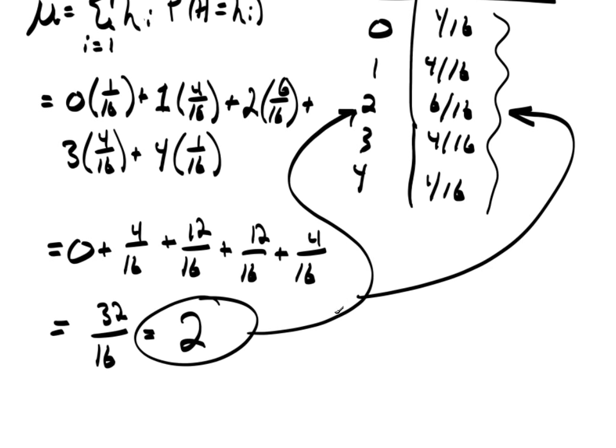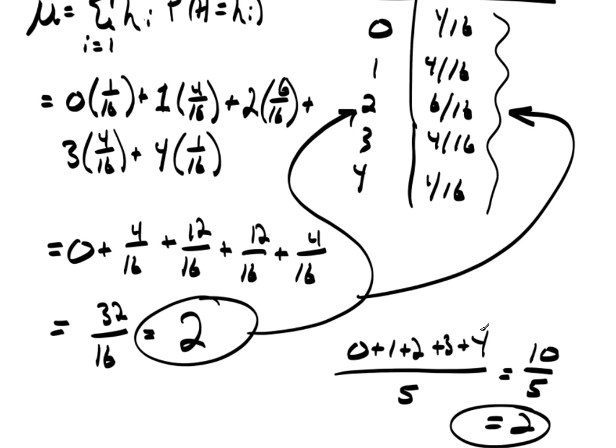See, if I did this as just a straight average, take 0 plus 1 plus 2 plus 3 plus 4. There's 1, 2, 3, 4, 5 numbers here, divided by 5. That is going to be 10 over 5, which is 2. So, now you're thinking, well, why didn't we just do that? Well, in this case, it would have worked, again, because of this symmetry.